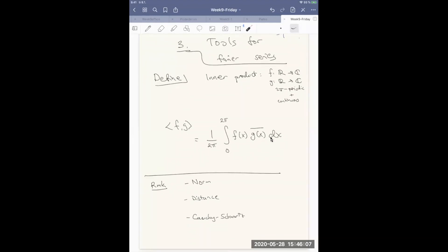Now, corresponding to this inner product, we have a lot of similar structures that we have on the Rn. If we want to define a norm, so called 2 norm, this can be defined as square root of the inner product of f with itself, which is the same thing as integral from 0 to 2 pi of f squared dx 1 over 2 pi and square root.